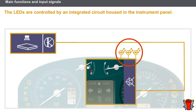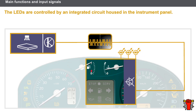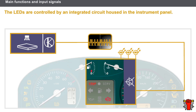On recent vehicles, the warning lights and alerts work with light-emitting diodes, or LEDs. The LEDs are controlled by an integrated circuit housed in the Instrument Panel. The integrated circuit lights an LED or not, depending on the input data it receives.